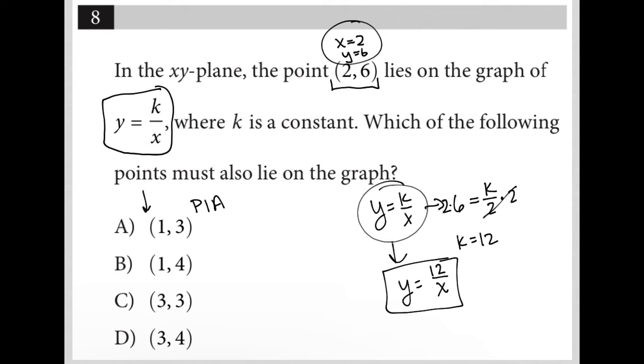Is it true that when x equals 1, y equals 3? So we have y equals 12 over x, which means this would become 3 equals 12 over 1. That is not true, which means A is not the answer.